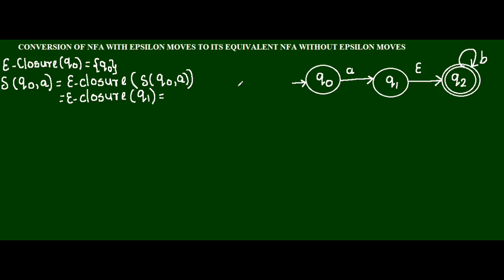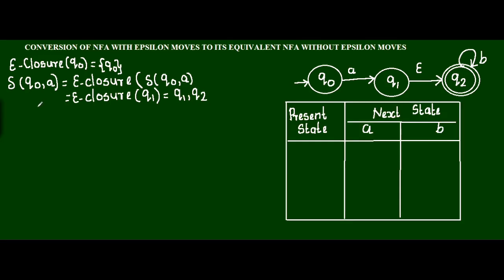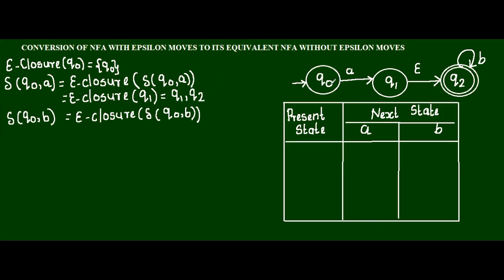Now find null-closure of Q1. Q1, if input is null, the next state is Q2. I always have to write this particular state as well, so I am writing Q1 and Q2. Simultaneously I am going to draw tables to make it easy to fill. Now Q0, if input is B, there is no next state, so it is null-closure of MT. Null-closure of MT is equal to MT. In the table: initial state Q0, if input is A, next state is Q1, Q2; if input is B, next state is MT.